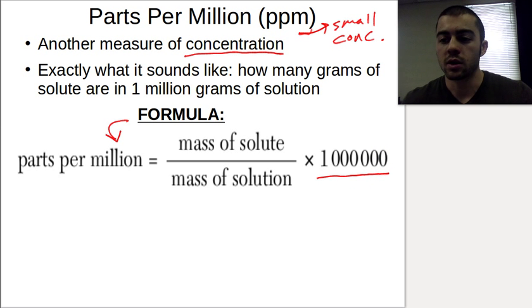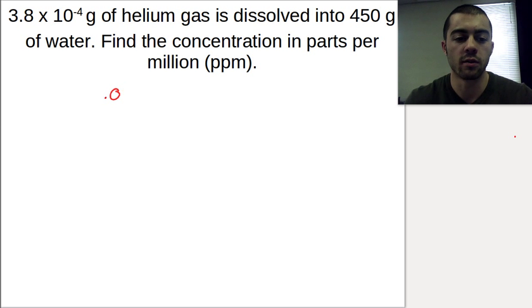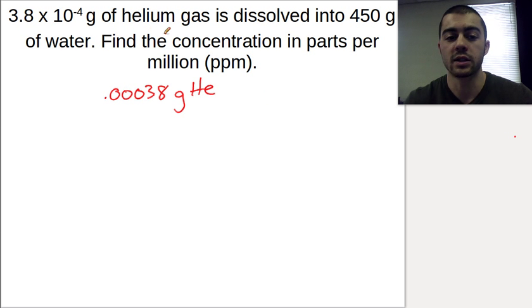Let's look at some calculations. We have 3.8 times 10 to the negative 4th grams of helium gas dissolved into 450 grams of water. What is the concentration in parts per million? If we convert this scientific notation to a decimal, we'd have 0.00038 grams of helium. That's our solute, that's what we're mixing in.